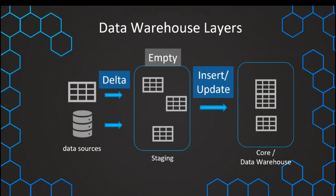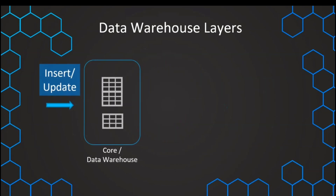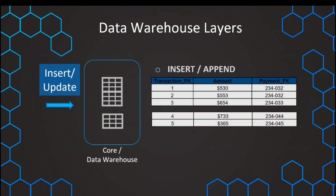That means we have different types of how data is written into the core layer, depending on whether the data might already exist — some updates may be necessary — or if the data can just be appended. The common type is a simple insert/update: we get additional data that is not present yet, that has never been loaded into our core layer, and then this data will just be appended to our table. So after rows have already existed, we append the two additional new rows.